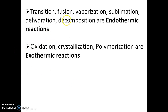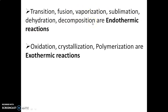Examples of endothermic processes include transition, fusion, vaporization, sublimation, dehydration, and decomposition. Examples of exothermic processes include oxidation, crystallization, and polymerization. These can all be identified from the DTA curve — upward curves for exothermic and downward curves for endothermic reactions.